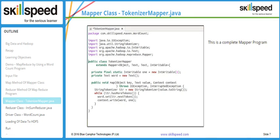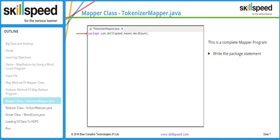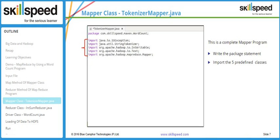Now we look at the TokenizerMapper.java file. Arrow number one is the package statement: com.skillsp.maven.wordcount. Arrow number two shows five predefined imports: IOException, which handles input/output exceptions, and StringTokenizer, which breaks the input file into words.